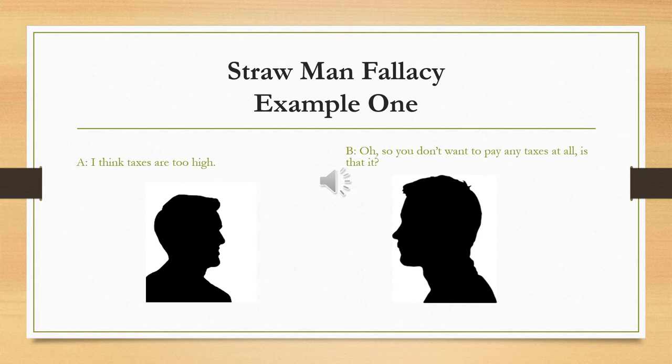This is a very common debate tactic, seen a lot in political debates especially. In this example, person B is the one committing the fallacy. Person A says, 'I think taxes are too high.' Person B, instead of exploring the dimensions of that view, says, 'Oh, so you don't want to pay any taxes at all. Is that it?' Clearly this is an extreme, exaggerated version of what person A said. Person A didn't say they don't want to pay any taxes — they said they want to pay fewer taxes. Person B has distorted A's position, made it ridiculous, and then attacks that ridiculous, distorted paraphrase.